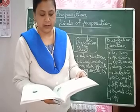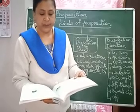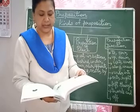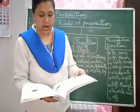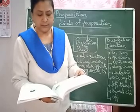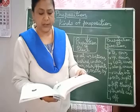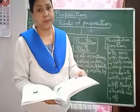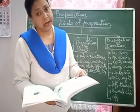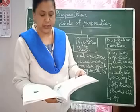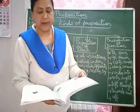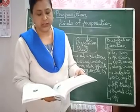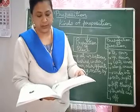The driver down the hill was amazing — 'down' is a preposition of direction. The cat jumped onto the sofa — 'onto' is a preposition of direction. They were coming towards us — 'towards' is again a preposition of direction.